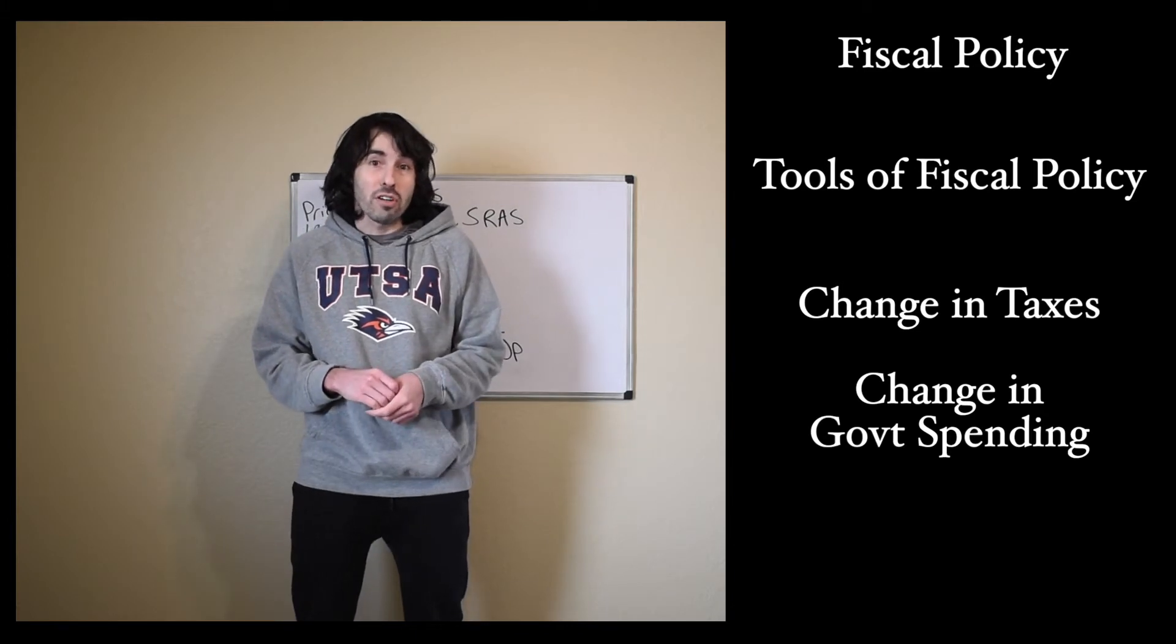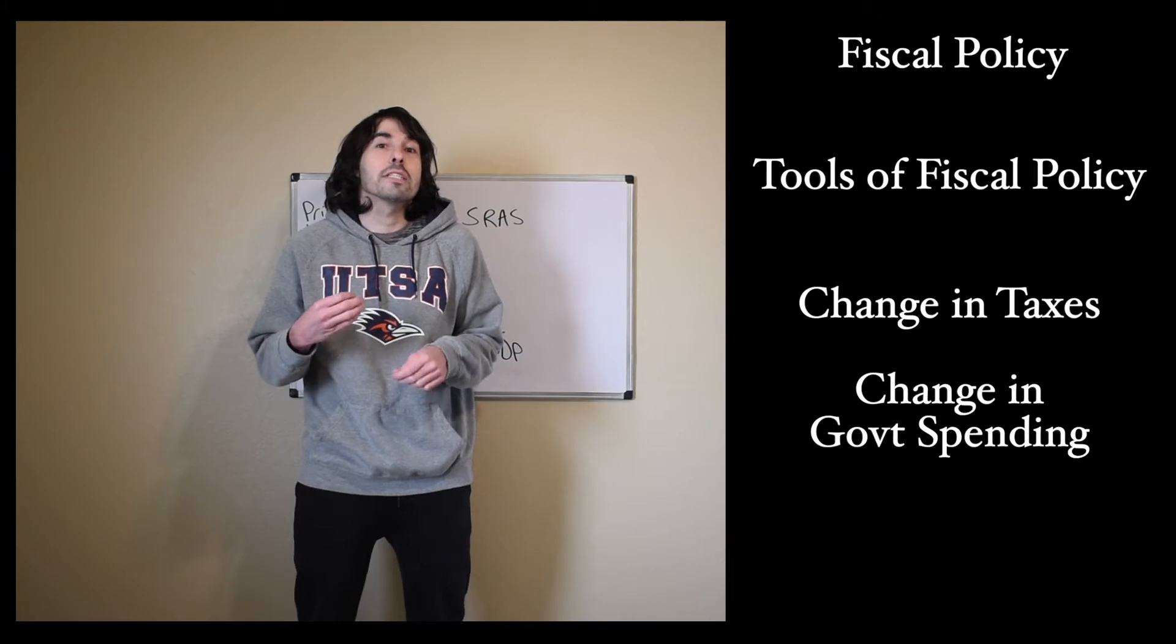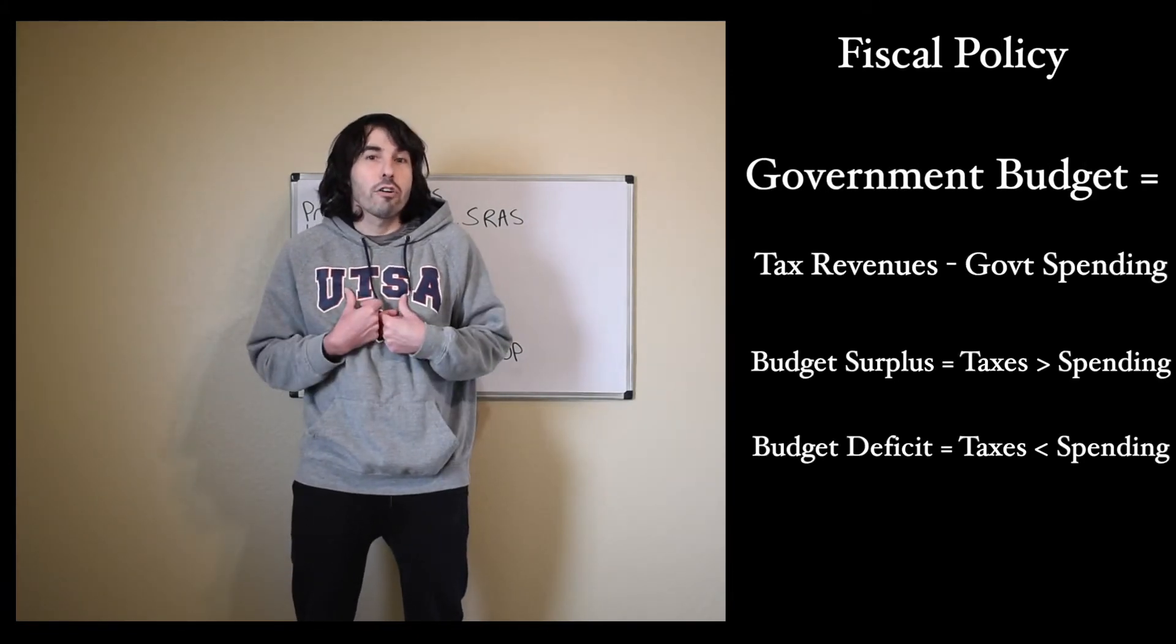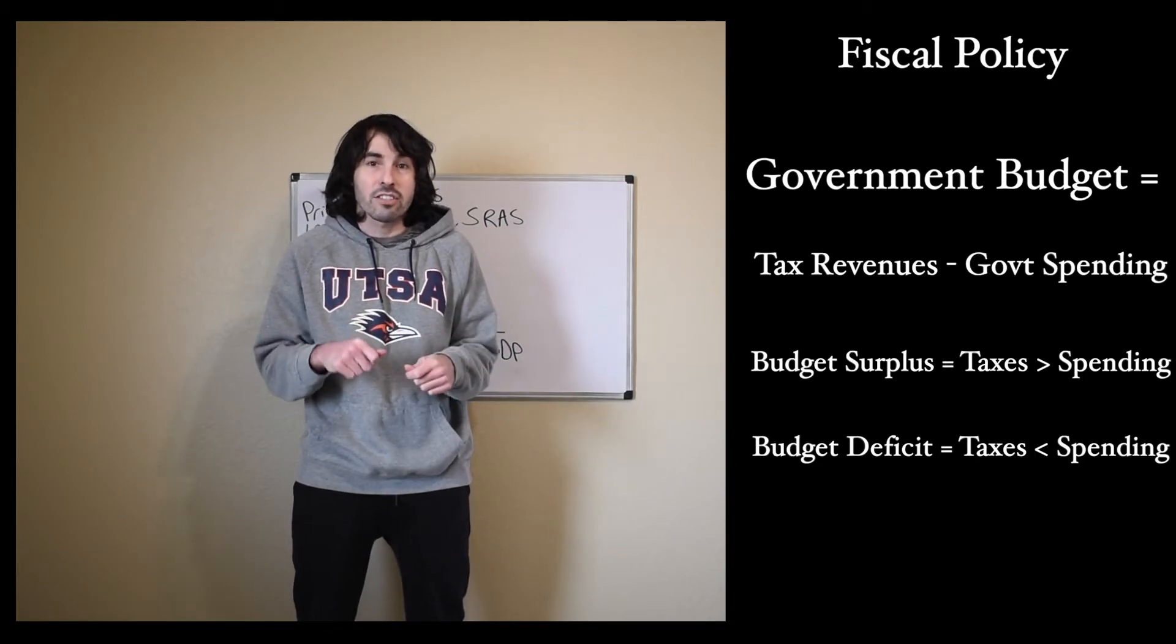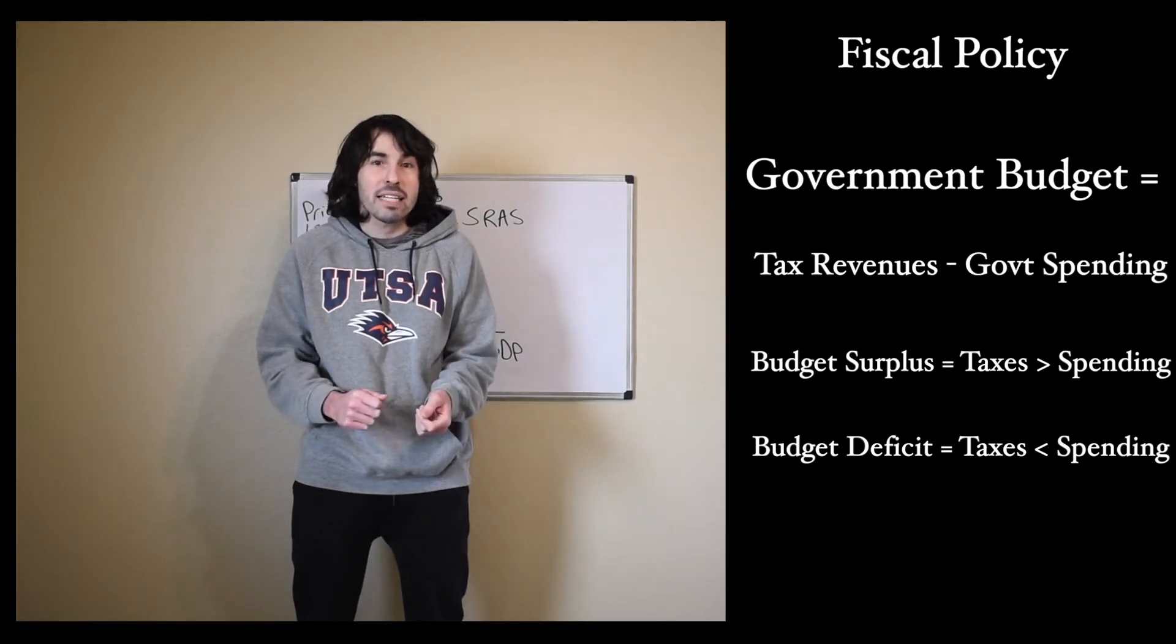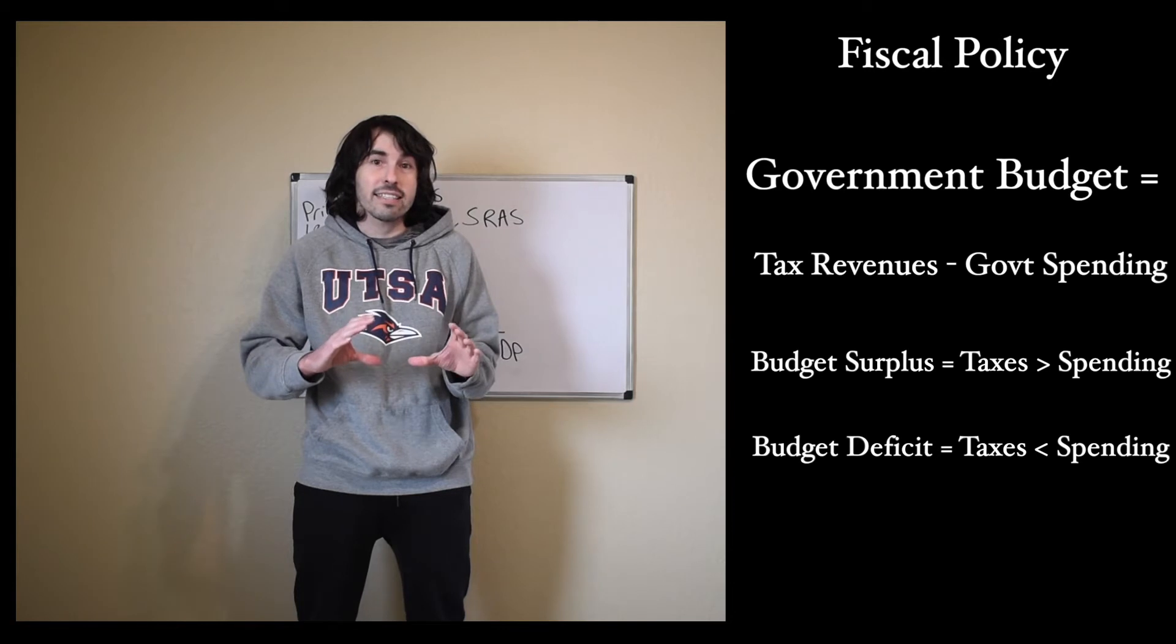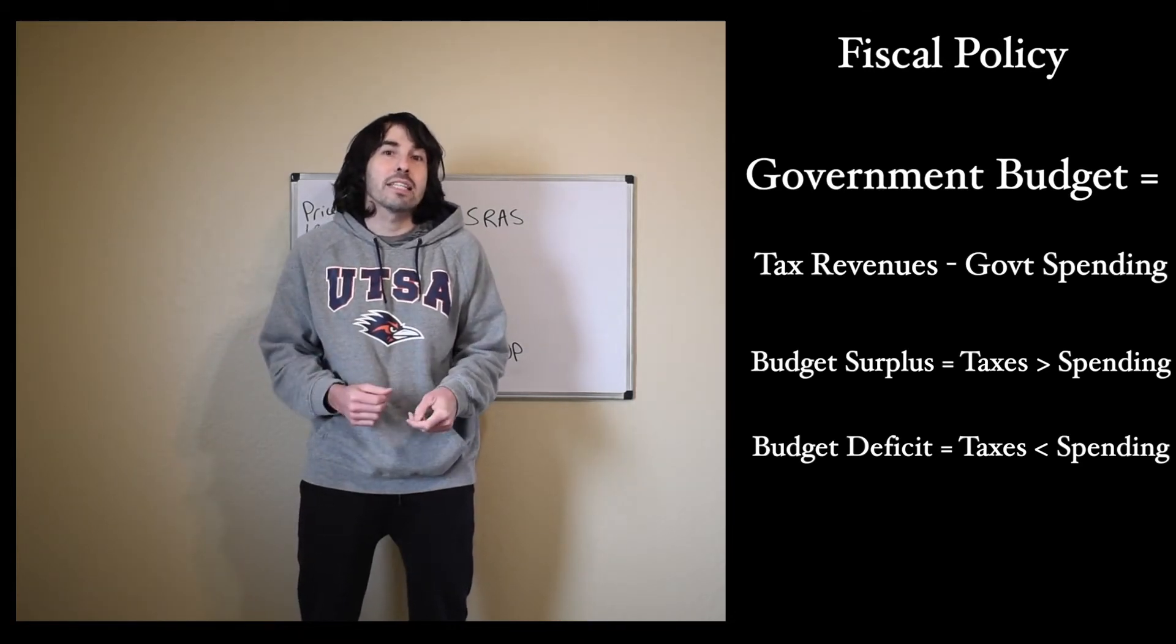These two tools of fiscal policy, government taxing and government spending, are going to affect the government's budget. The government's budget is much like our own budgets. It's made up of income, the money that we bring in, so for us it'd be like our paycheck, minus spending, the money that we're actually spending. So for me, my budget each month is the check that I get to take home at the end of the month, minus all the money that I spend that month.